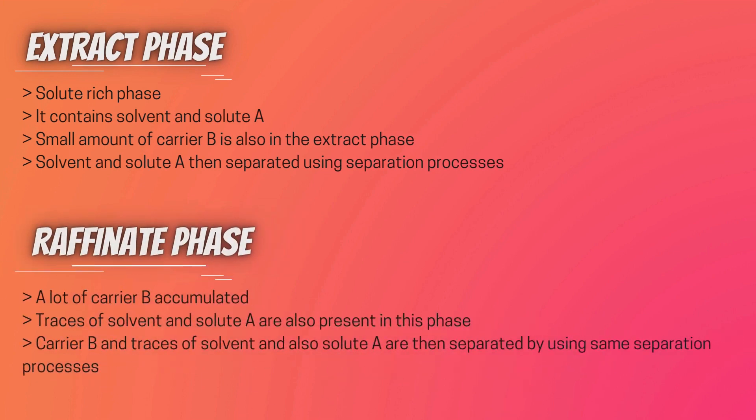The extract phase is the solute-rich phase, containing solvent and solute A. A small amount of carrier B is also present in the extract phase. Solvent and solute A are then separated using processes like distillation, re-extraction, or density difference. Separated solute A is sent for use and the solvent is recycled. The raffinate phase is where a large amount of carrier B accumulates; traces of solvent and solute A are also present. These are separated using the same separation processes — distillation, re-extraction, or density difference.